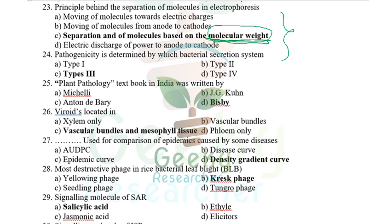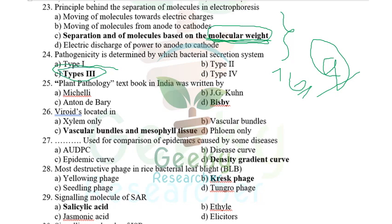Pathogenicity is determined by which secretion system? There are nine identified secretion systems in total — six in plant pathogenic bacteria, three in other bacteria. Among all bacterial secretion systems, the Type 3 Secretion System is especially responsible for pathogenicity. Type 3 secretion system is very important for bacterial pathogenicity.